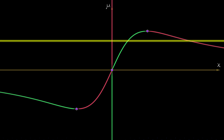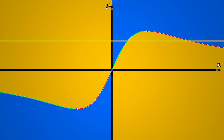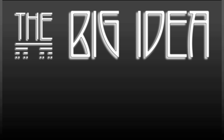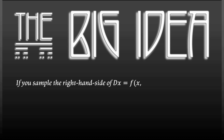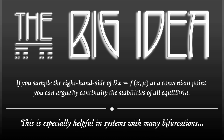Here's the key idea. Once we've identified where the right-hand side equals zero, then by continuity every other location in the x-mu plane has to be either positive or negative, and these regions have to be connected. That really gives you a lot of information about the stabilities of the branches of equilibria. The big idea is: if you have a system dx/dt equals f(x, mu) where f is continuous, you can sample it at one convenient location, determine whether the right-hand side is positive or negative, and then argue by continuity the stabilities of all the equilibria. This is really helpful when you've got a very complex system with many bifurcations.